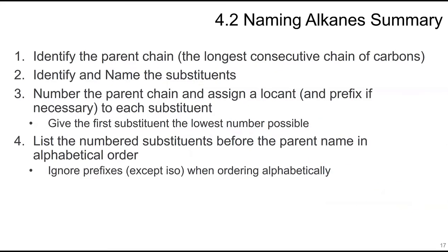To summarize the naming steps: identify the parent chain (longest consecutive carbon chain), identify the substituents, number the parent chain giving the first substituent the lowest number possible, and list the numbered substituents before the parent name in alphabetical order. Ignore prefixes like di-, tri-, tetra- when ordering alphabetically, except for iso-.